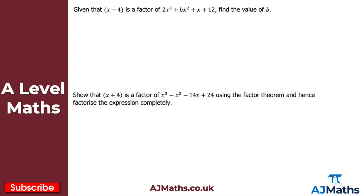Moving on, we have two practice questions here for you to have a go at. Pause the video now, have a quick go, and then we'll take a look at what you should have got. So for this first one, we're told x minus 4 is a factor of this cubic polynomial, and what we want to do is find the value of b — which is the coefficient of x squared. All we need to do is use the fact that x minus 4 is a factor, then use the factor theorem, so f of 4 must be equal to 0.